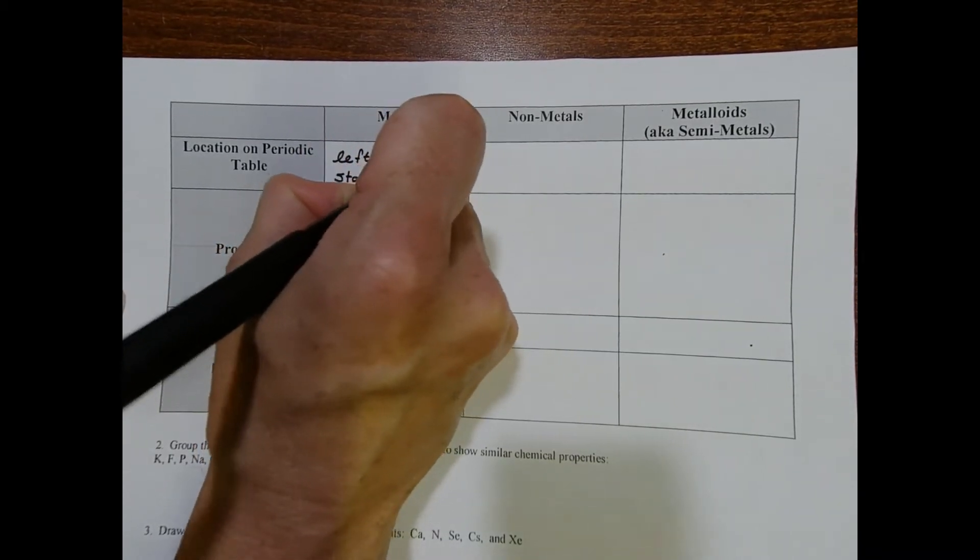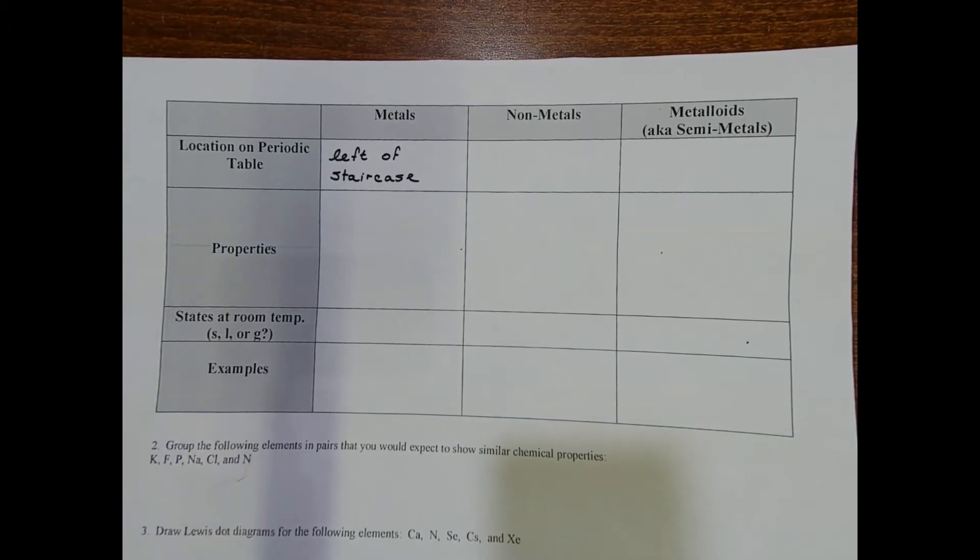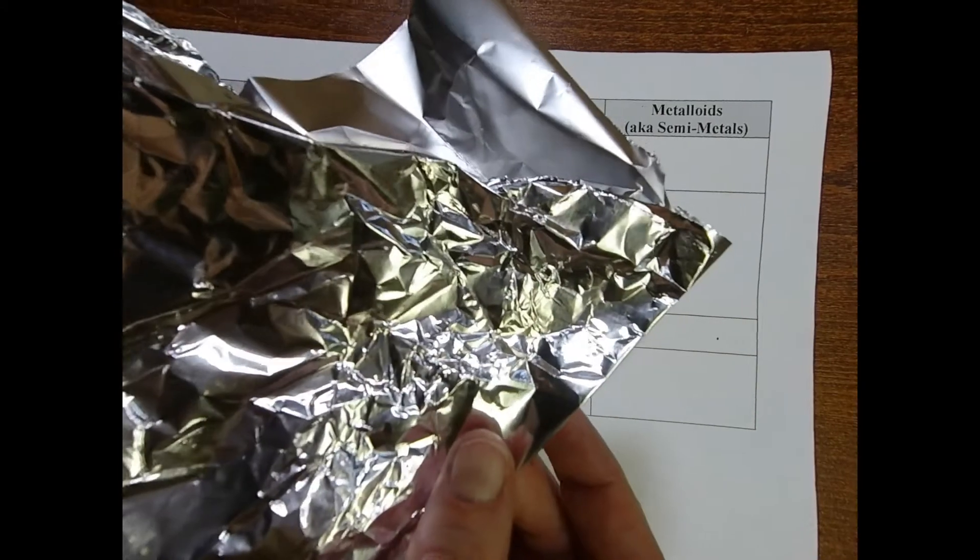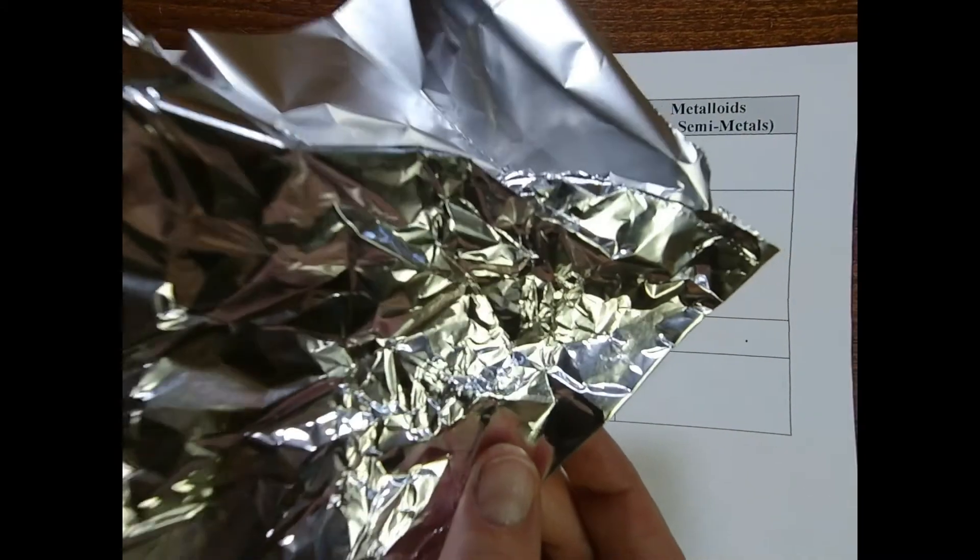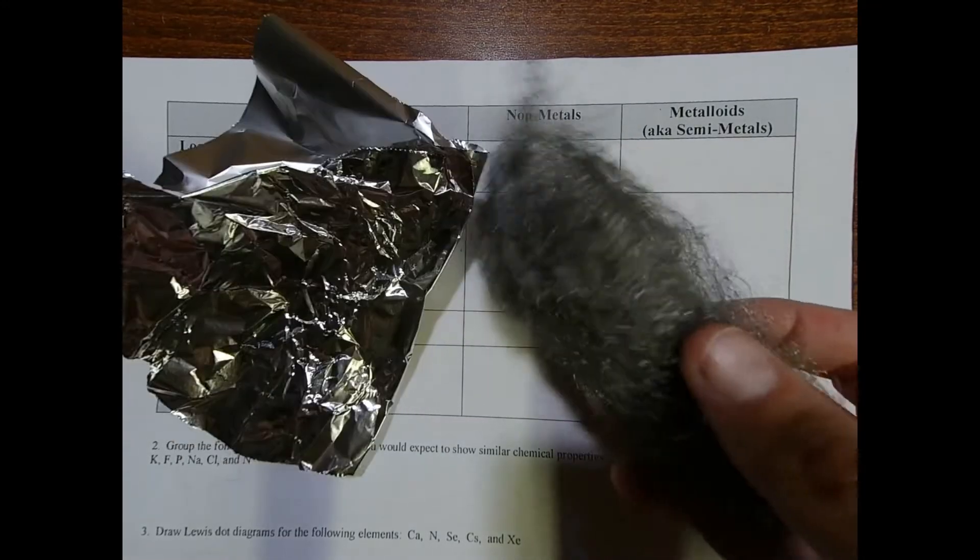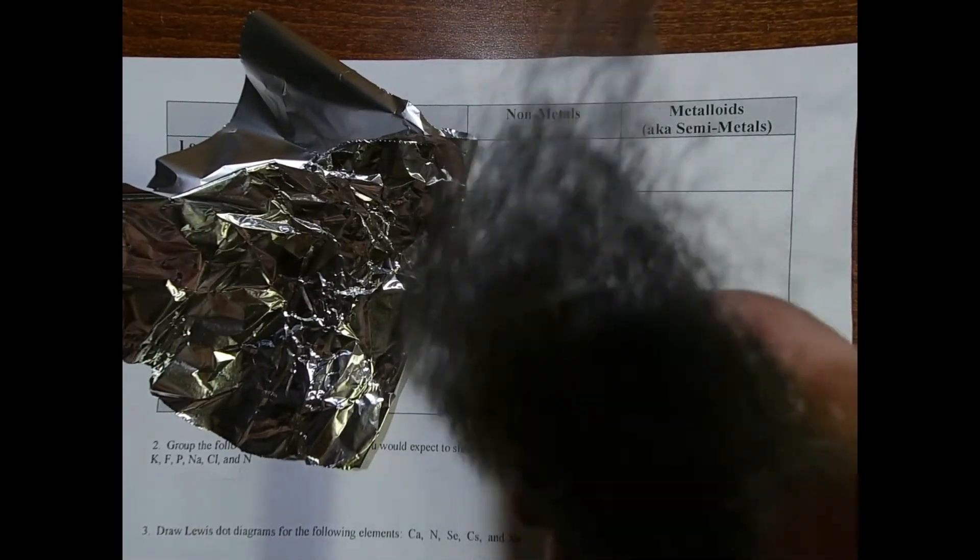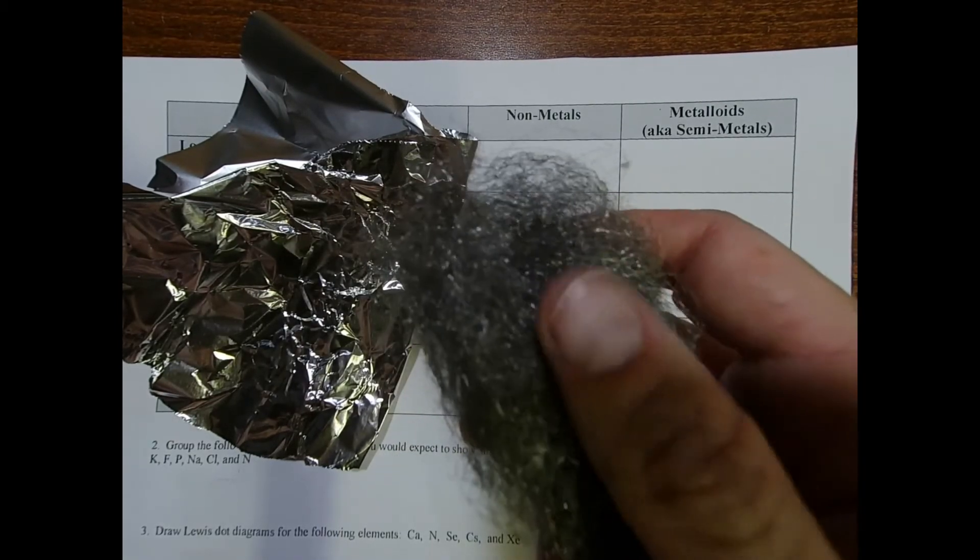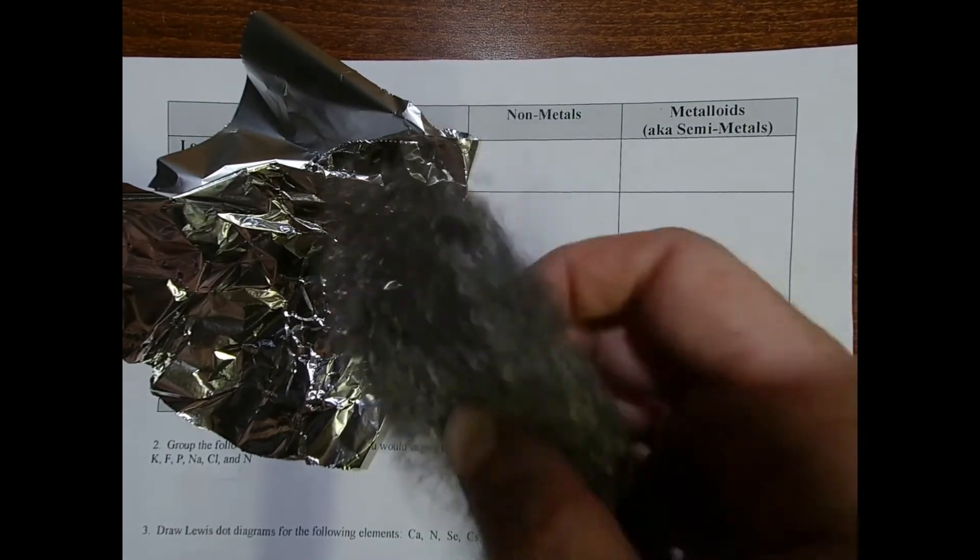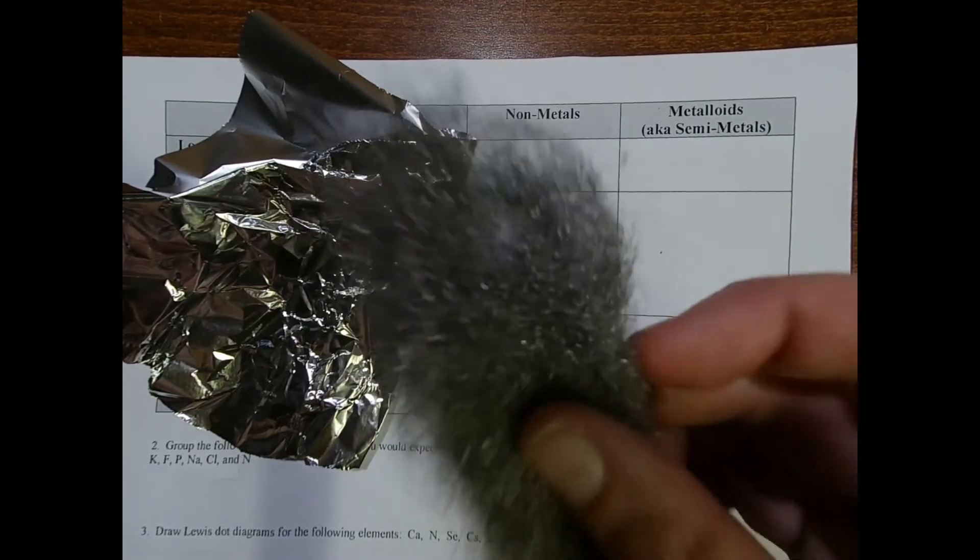What are the properties of metals? I grabbed some examples from my house. I have a piece of aluminum foil and I also found some steel wool. Steel wool is used for sanding, especially if you want to sand something that's metal or get some rust off. You might use steel wool.